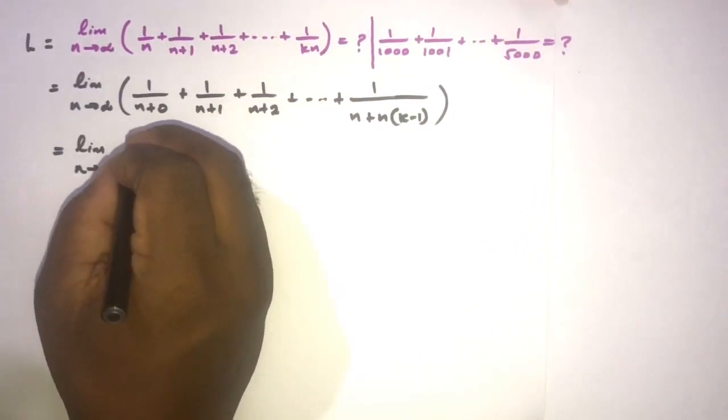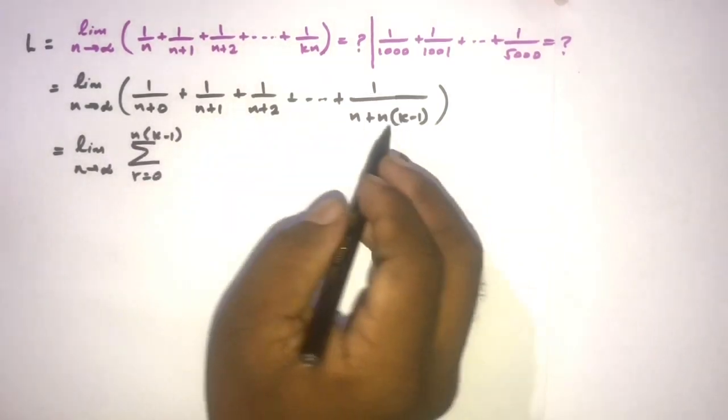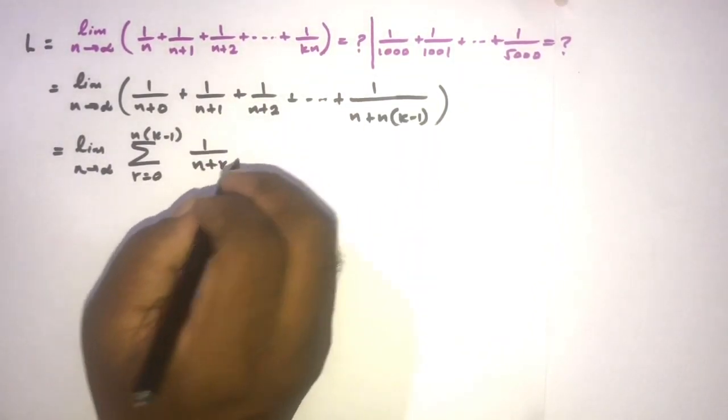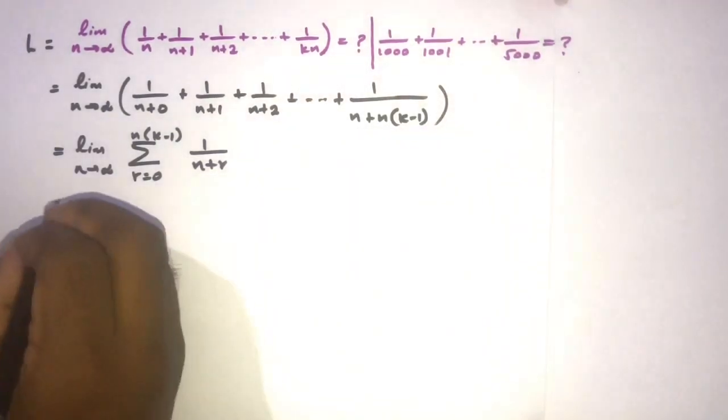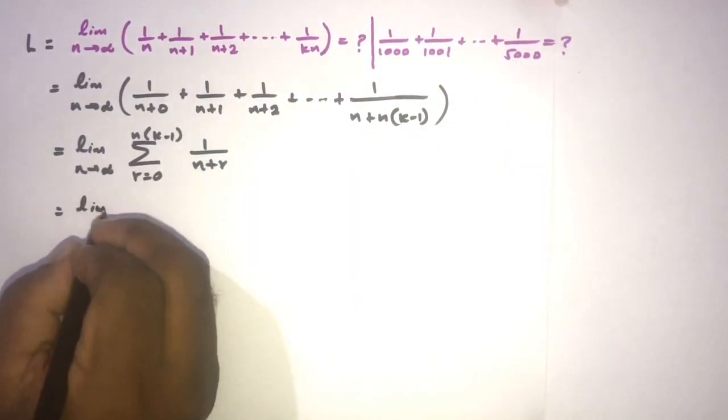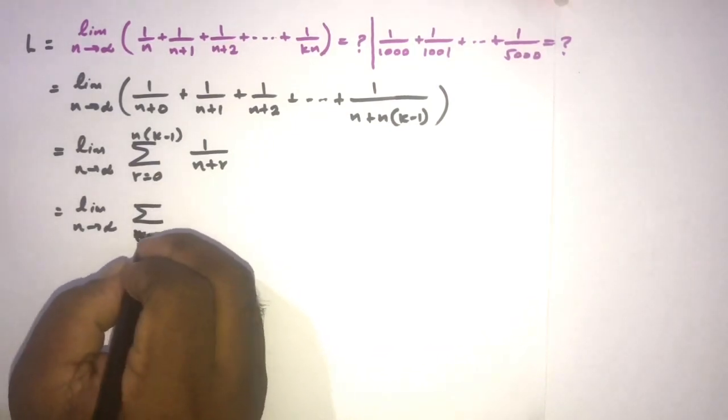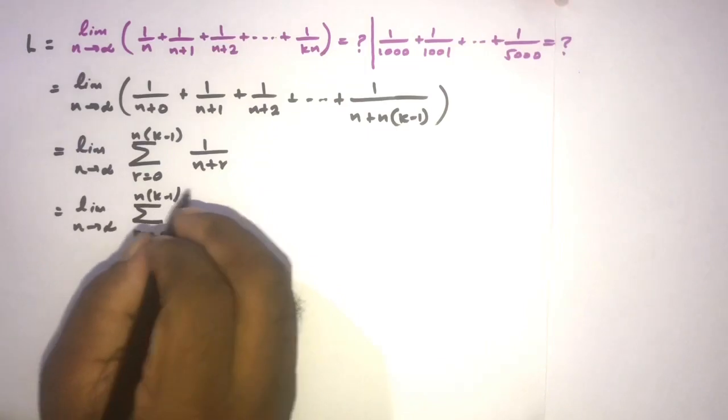So here, sum of r is equal 0 to n times k minus 1, plus 1 over n plus r. Then, as the next step, here n approaches to infinity, sum of r is equal 0 to nk minus 1.